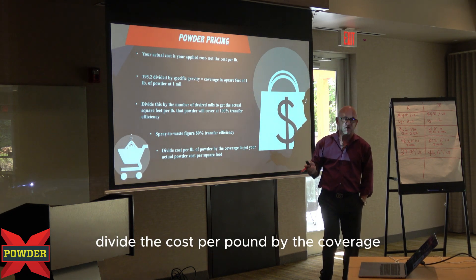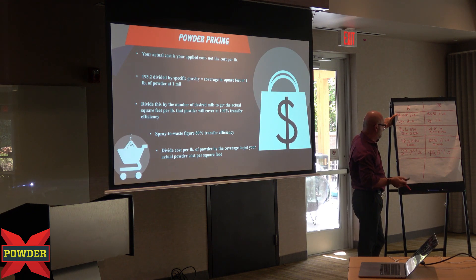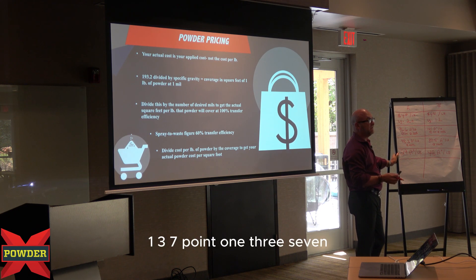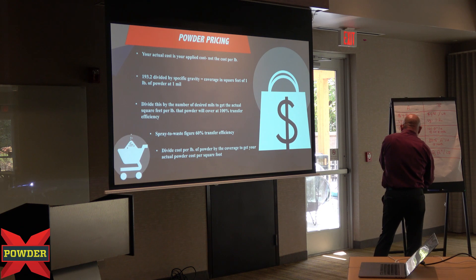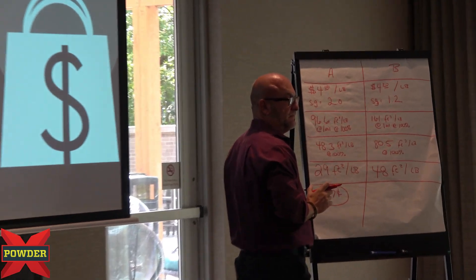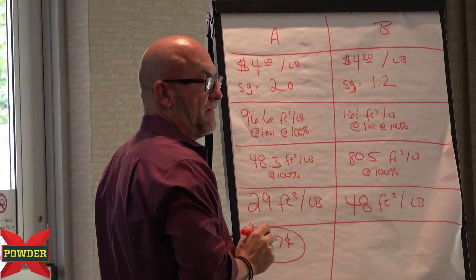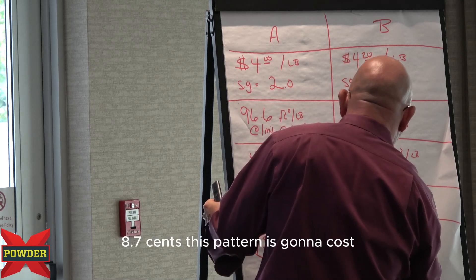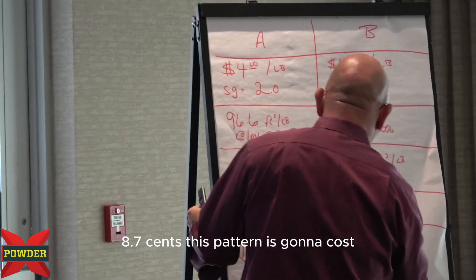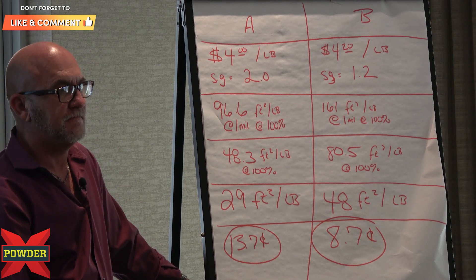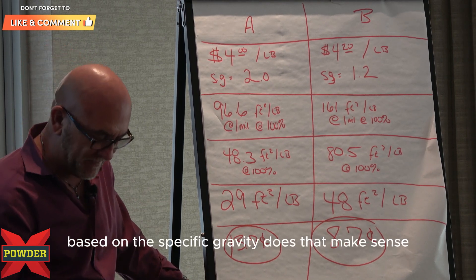Then all you've got to do is divide the cost per pound by the coverage. So what's $4 divided by 29? That's 0.137 — 13.7 cents per square foot. What's $4.20 divided by 48? That's 0.087 — 8.7 cents per square foot. Company B's powder is going to cost you 8.7 cents a square foot, and Company A's is going to cost you 13.7 cents a square foot. At the end of the day, based on how much you're using and the specific gravity, does that make sense?